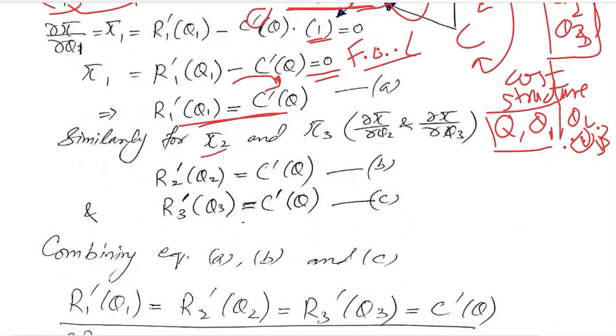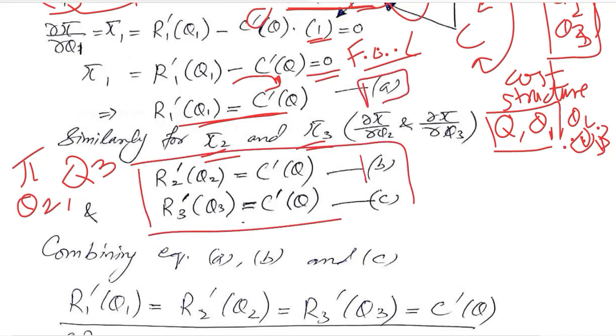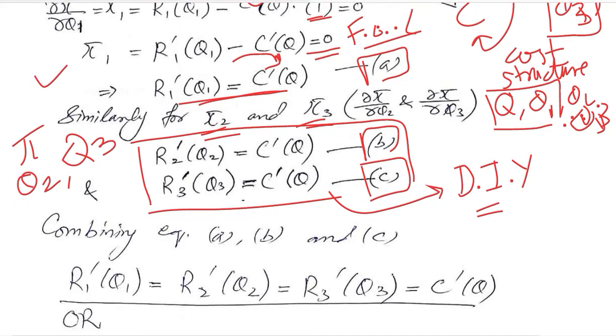Now PI2 and PI3 are there. These are the derivatives of the same profit function with respect to Q2 and Q3. When we do this we will get these two equations, A, B and C. These are the three first order conditions. For these you can take the derivative. This is DIY for you. In the same way as you did for Q1, you can do it for Q2 and Q3.